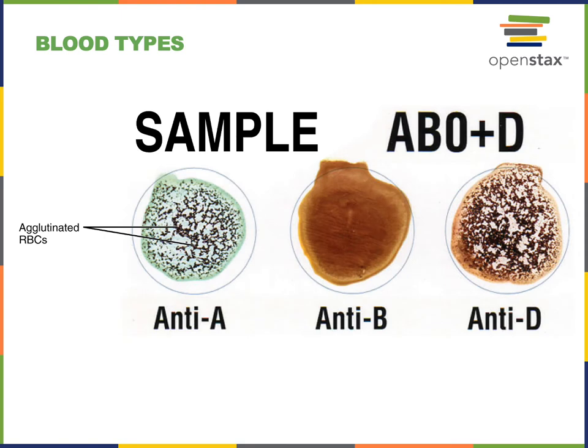In addition to the ABO blood group, there is another surface antigen on erythrocytes known as the D antigen, and the presence or absence of this D antigen gives rise to what we call the RH blood group. RH stands for rhesus — the rhesus macaque is a monkey that was first studied in order to identify this antigen and this blood group. You can either have the D antigen, meaning you're positive for the RH factor, or you do not have the D antigen, meaning you're negative for the RH factor.